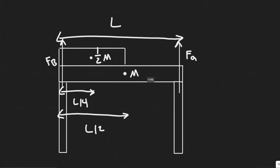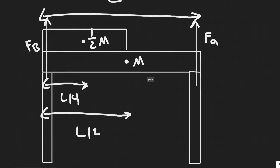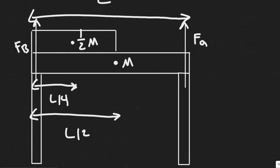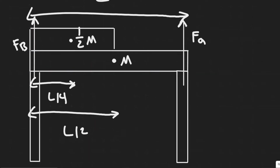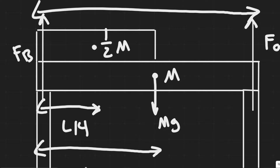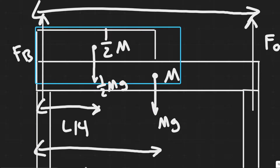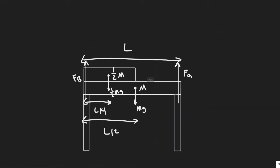The first thing we need to label is the force due to gravity — we need to draw the free body diagram. The only forces here are the two support forces and the force due to gravity for both beams. For the main beam, it's just Mg acting at the center. For the half beam on top, the mass is one-half M since it's half the size, so its gravitational force is one-half Mg.